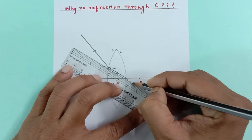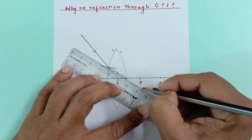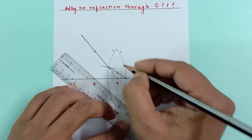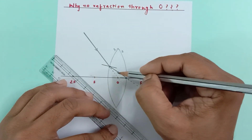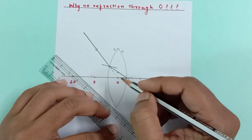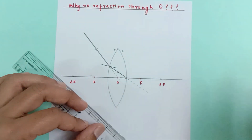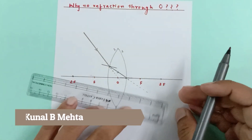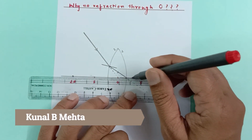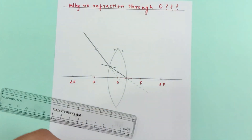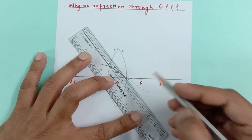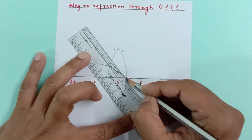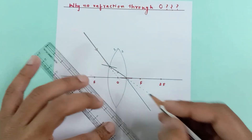The principal axis itself is going to behave like a normal. Now this light ray would like to go in a straight line, but since it comes out of the glass into the air it will bend away from the normal. I'll highlight the normal — away from the normal means the ray goes in this direction.